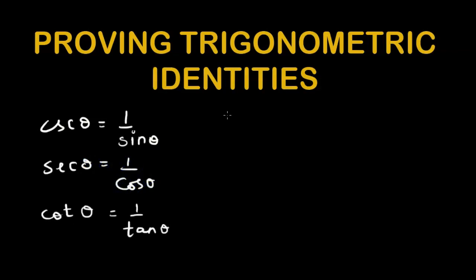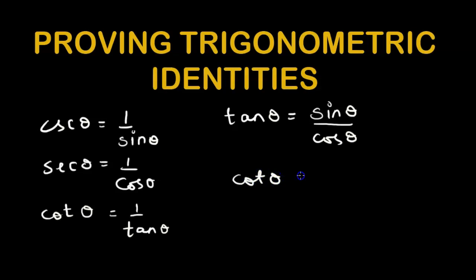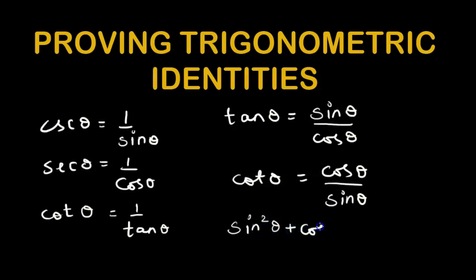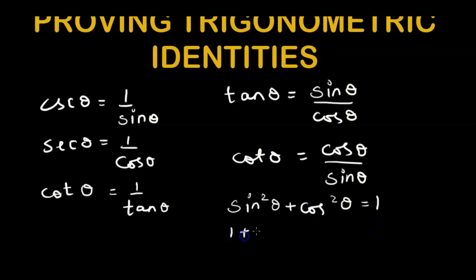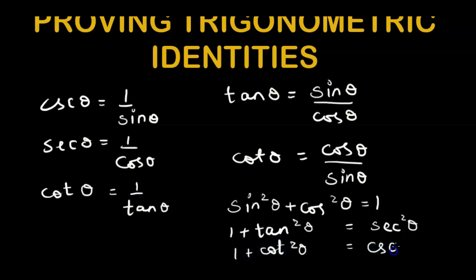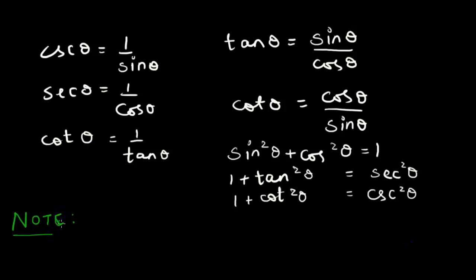We also have cot theta equal to one over tan theta. Tan theta can be written as sine theta over cos theta, and cot theta equals cos theta over sine theta. Another helpful set of formulas for proving identities: sine squared theta plus cos squared theta equals one; one plus tan squared theta equals secant squared theta; and one plus cot squared theta equals cosec squared theta. A useful note: try to change both left and right sides to sine and cosine form.